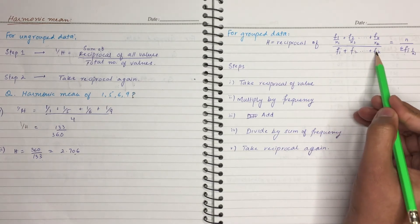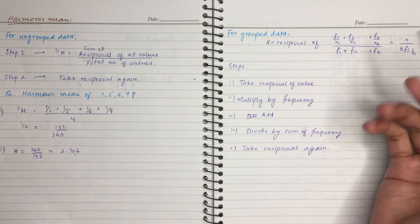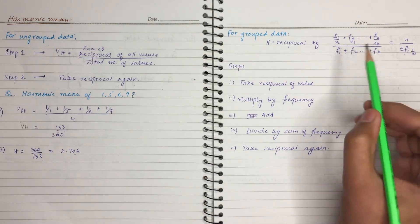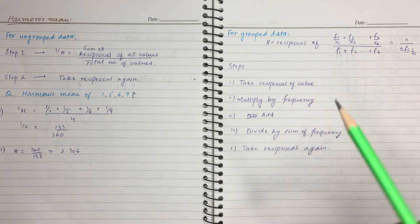We will have F1 plus F2 plus Fn to our values. This will be sum of frequency. Sigma F will be equal.